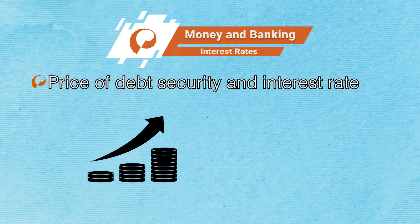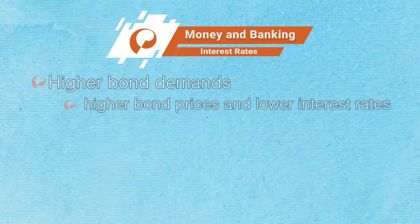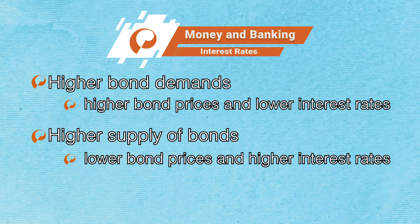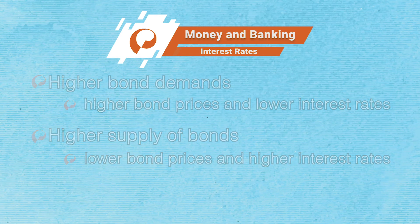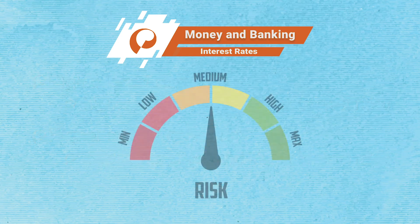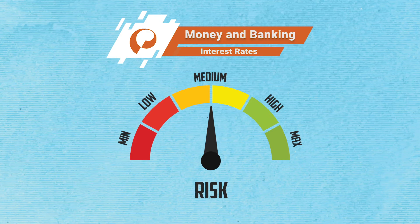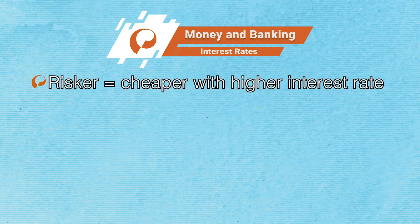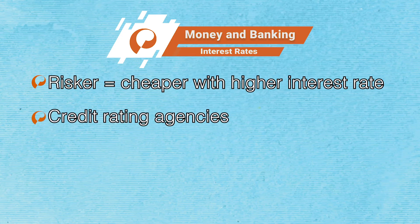Bond prices increase when the demand for bonds increases, and decline when the supply of bonds increases. Therefore, a higher demand for bonds leads to higher bond prices and lower interest rates. A higher supply of bonds leads to lower bond prices and higher interest rates. Debt securities can be more or less risky, depending on the probability that the issuer might default or not repay. Riskier securities are cheaper and pay a higher interest rate than safe securities. Credit rating agencies are firms that research the likelihood that different issuers might default and rate issuers' bonds accordingly.